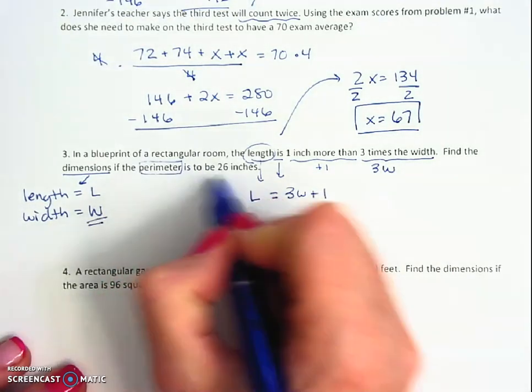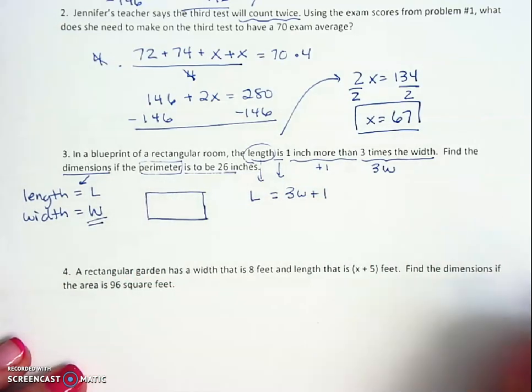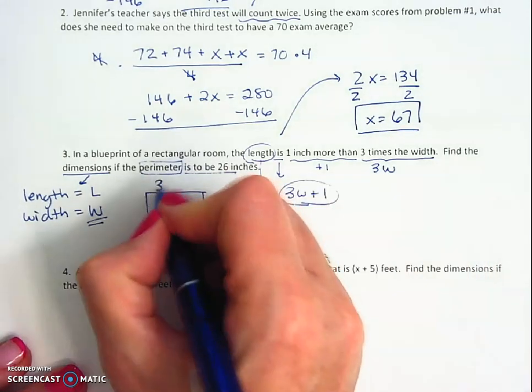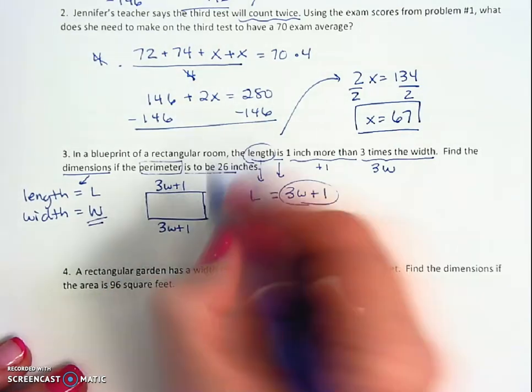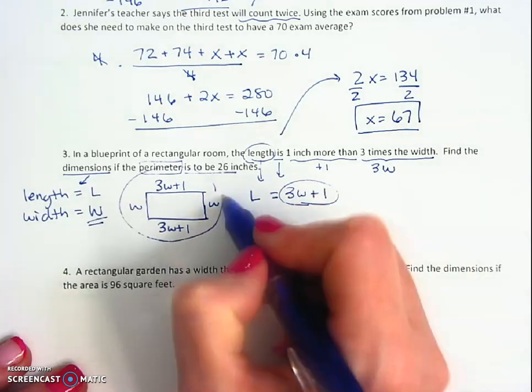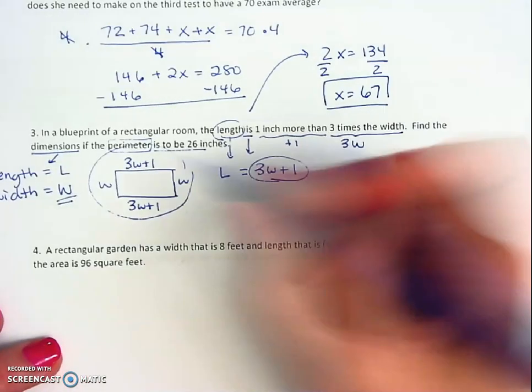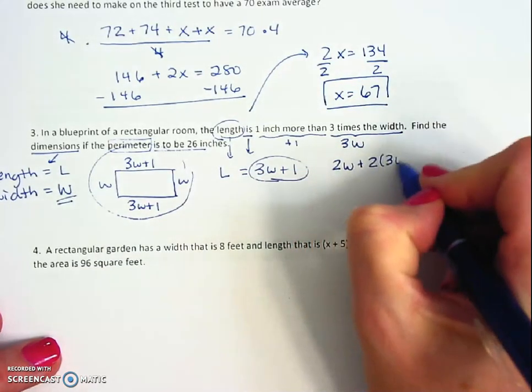Find the dimensions and I know that the perimeter is 26. So perimeter means when you add up all the sides. My length is 3w plus 1, opposite sides are equal, and my width is just w. So I'm going to add all four of these things up.